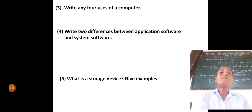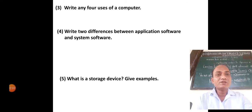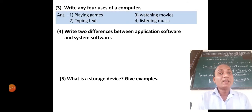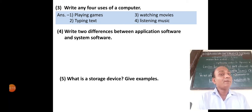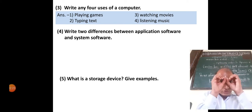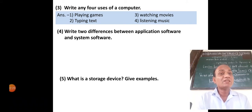The next question: write any four uses of computer. We can play games, we can do typing — meaning we can type our name, address, and mobile number. We can watch movies on the computer. We can listen to music on the computer. These are the four uses of computer.